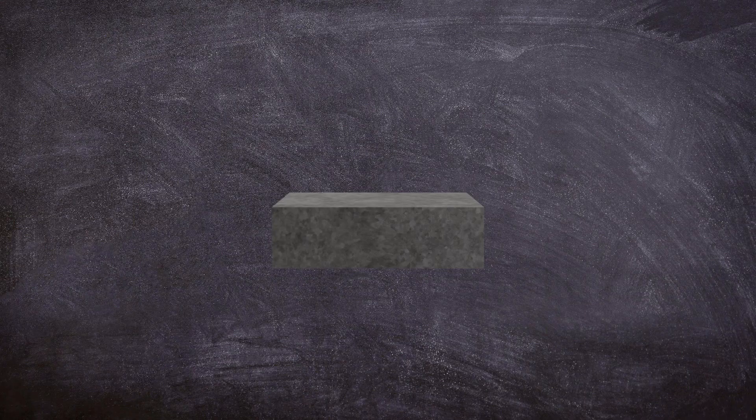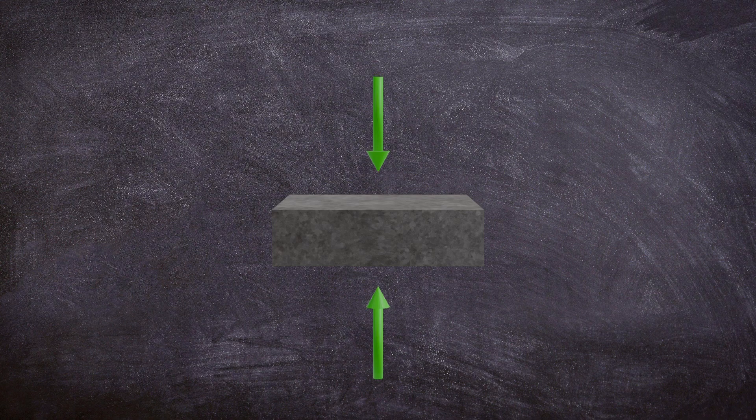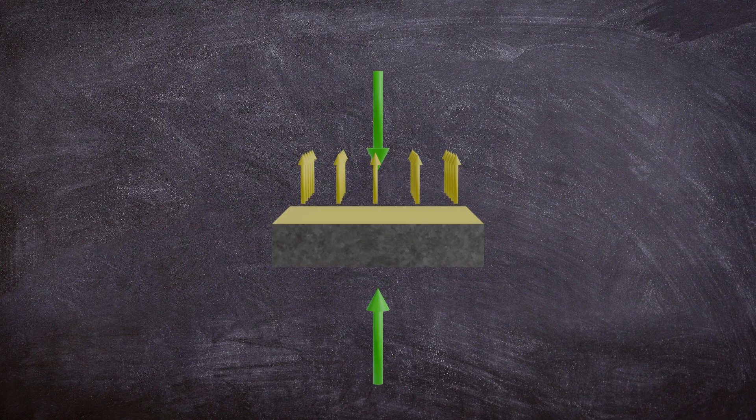Compression stress arises when forces push an object together along the same axis, reducing its length and increasing its density. This stress acts perpendicularly to the surface it compresses, opposing tension stress, which pulls an object apart.